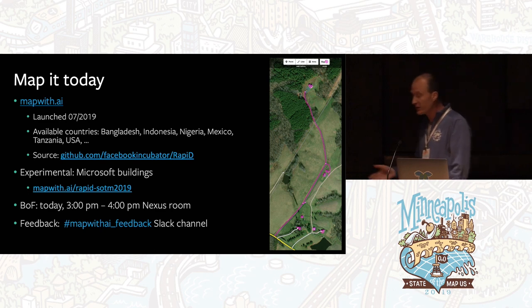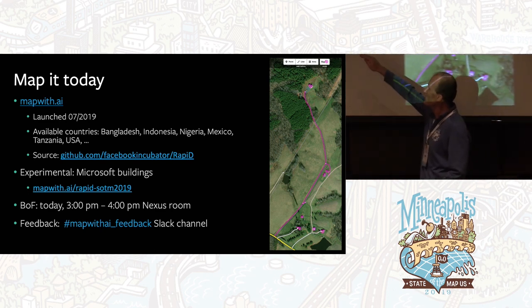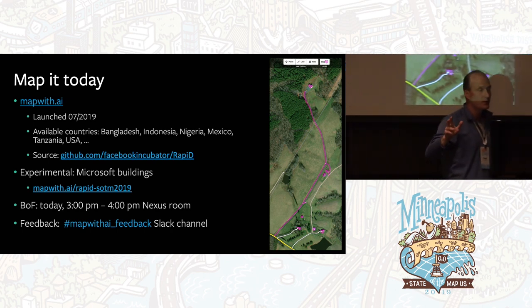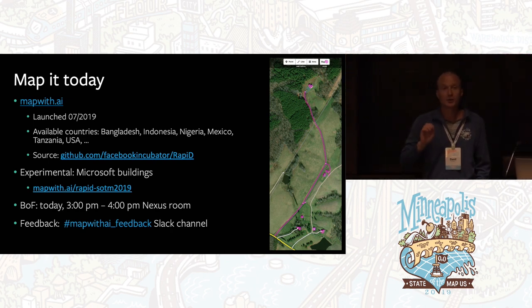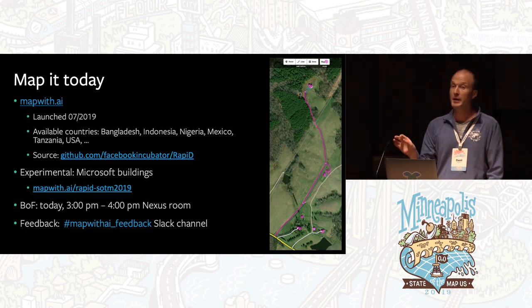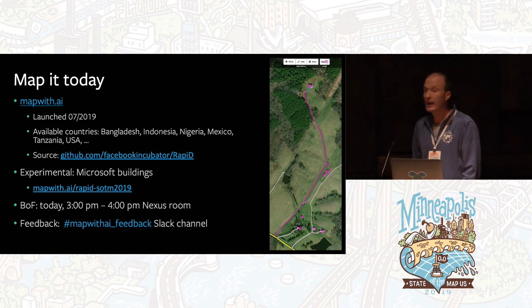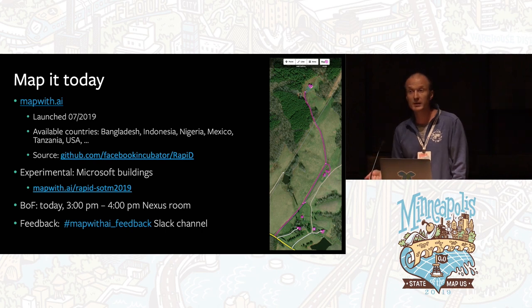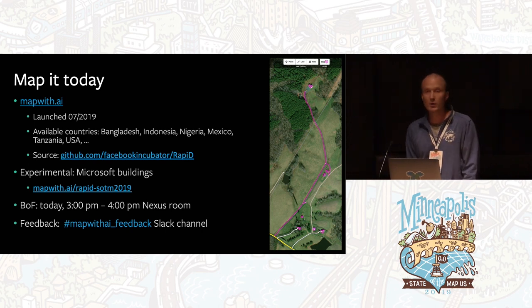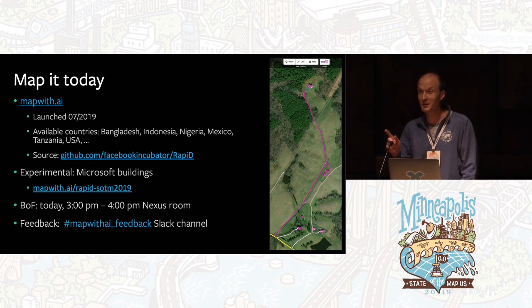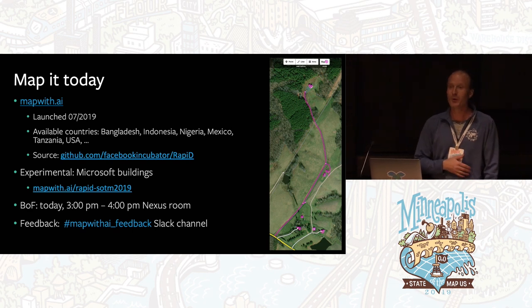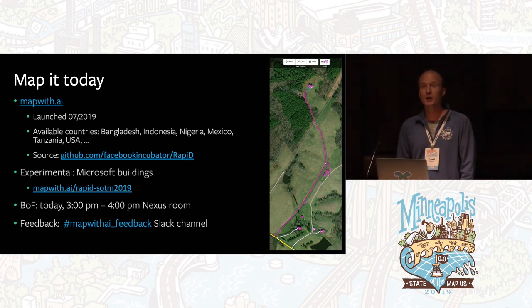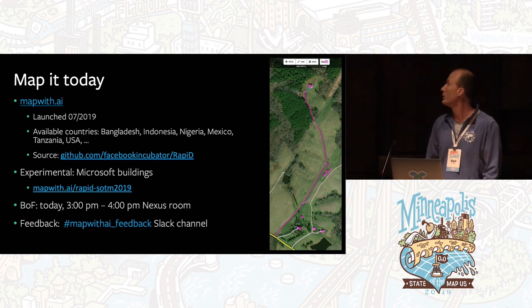If you'd like to try it, it's very simple: take a laptop, go to this link, zoom into any part of the United States — where you live or your parents live — and give us feedback. We'll have an open session today from 3 to 4 o'clock on the second floor. Try Rapid and give us feedback — constructive feedback, hopefully. Huge thanks to the iD editor team, to Microsoft, and to the Facebook team who built, tested, and released this tool.